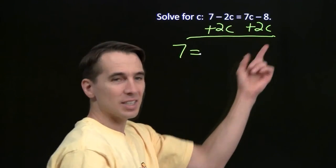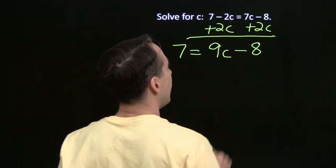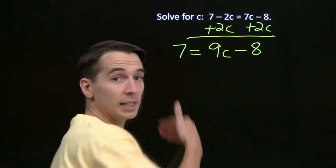Then we'll just be left with 7 on the left. And on the right side, the 7c plus the 2c. That gives us 9c. And of course, we still have the minus 8 here. And now we have an equation we know how to deal with. This is kind of just like the last one we solved.